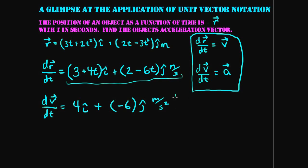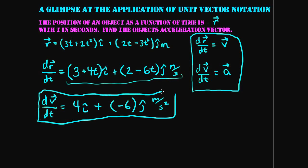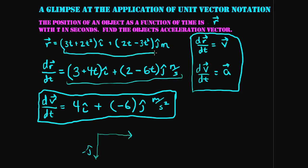Notice there are no more t's in the acceleration — because the position terms were quadratic, by the second derivative the accelerations are constant. In the x-direction he's constantly accelerating at 4 meters per second squared, and in the negative j-hat direction accelerating at 6 meters per second squared. You can use unit vectors to go from a position vector all the way down to an acceleration vector, and this is applicable to any type of vector in physics. Thanks for watching.